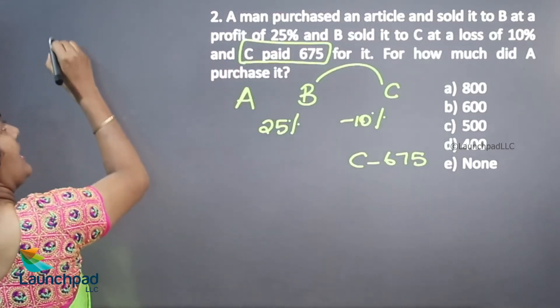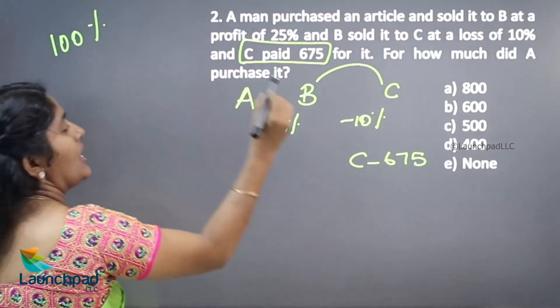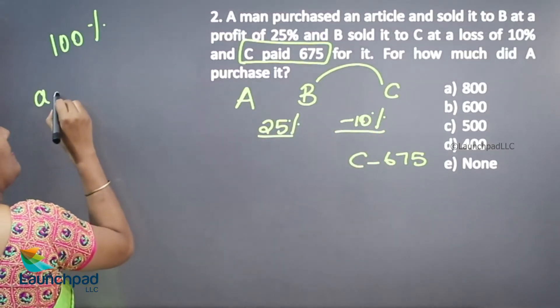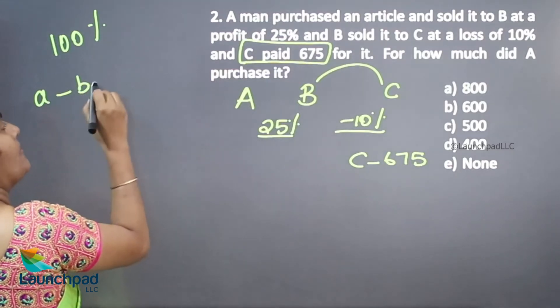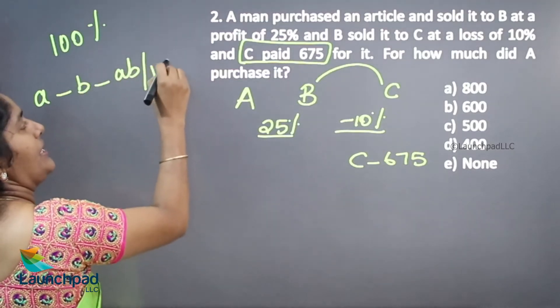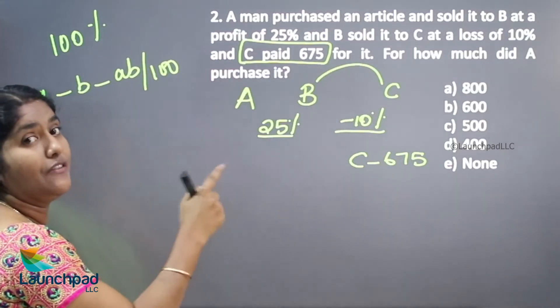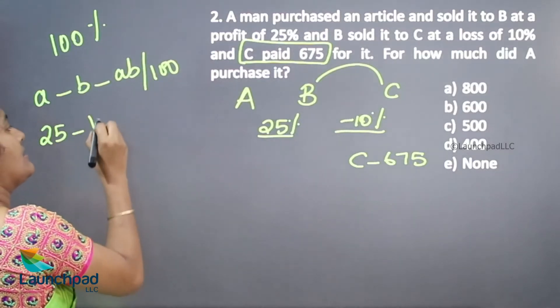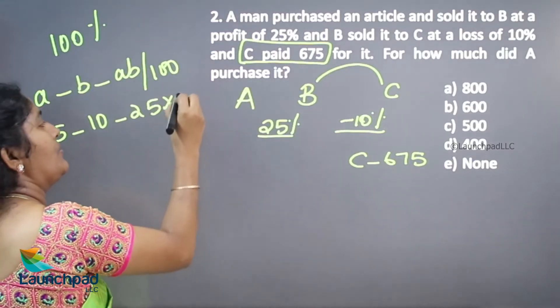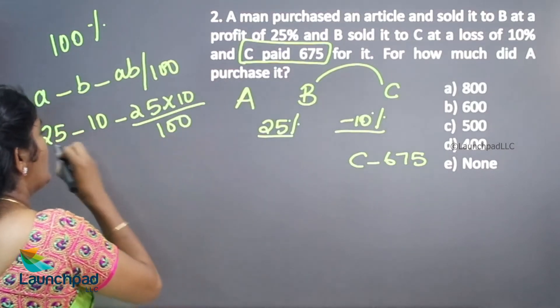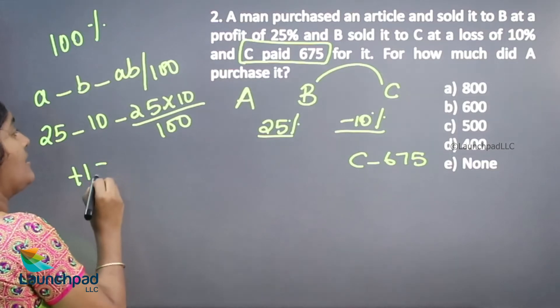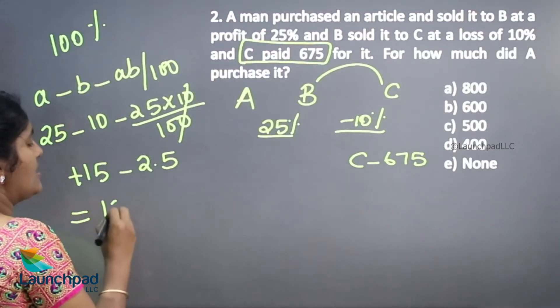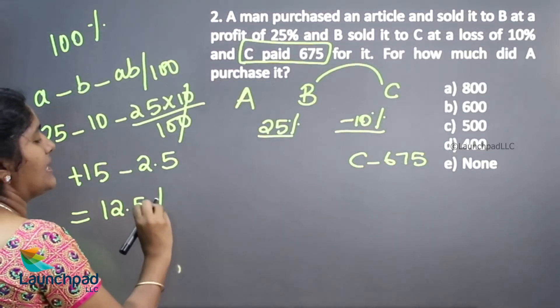The initial amount at A is 100%. So having two transactions, that is profit A minus B plus into minus minus AB. Here we are finding the effective change. There are two effective changes in this transaction. So 25 minus 10 minus 25 into 10 divide by 100. So 25 minus 10 plus 50 minus 2.5. 0, 0 cancel 2.5. Finally 12.5% is increased.